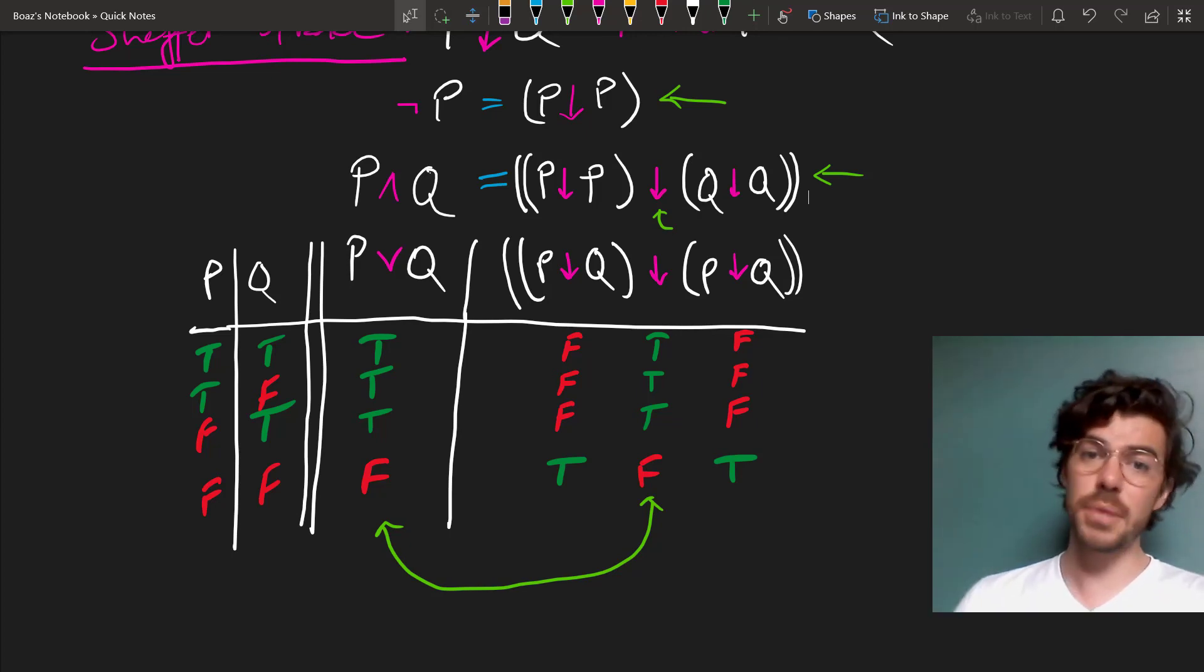But again, how many operators is the right number? If your operators are truth-functionally complete, there isn't really a right answer to that question. And you can certainly make a case for adding more or taking certain out of the language we're developing here.